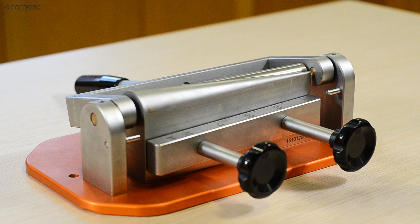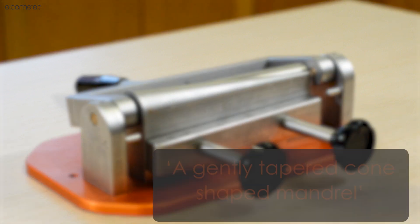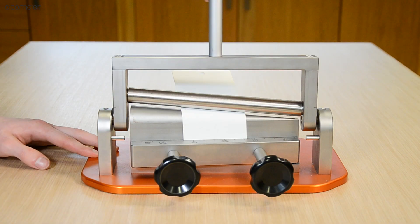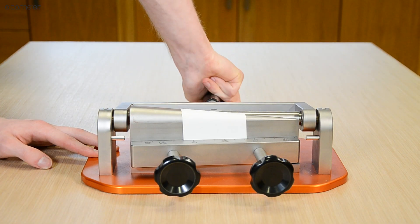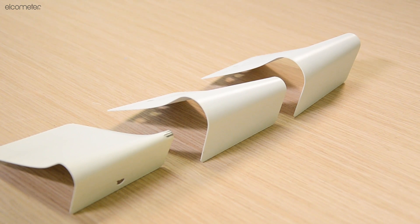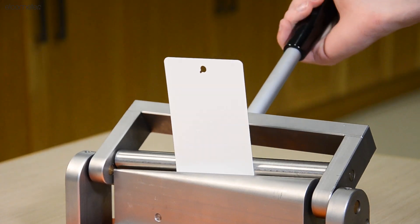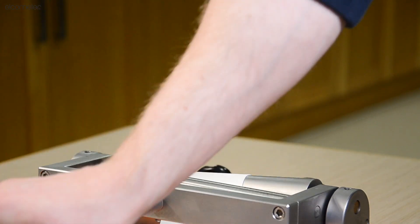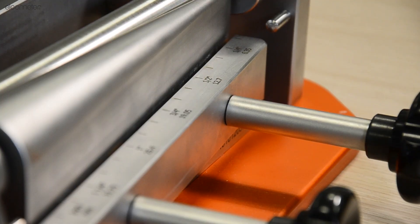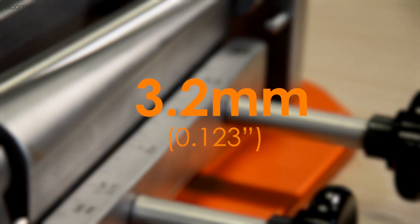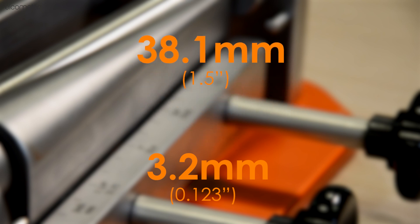A conical mandrel can be defined as a gently tapered cone-shaped mandrel against which a material can be forged or shaped with its diameter gradually increasing. The Elcometer 1510 conical mandrel bend tester has a diameter ranging from 3.2 mm all the way up to 38.1 mm.